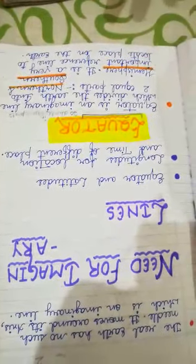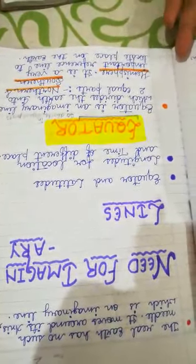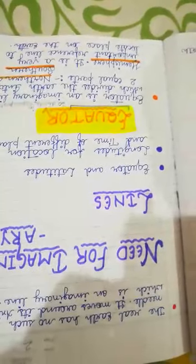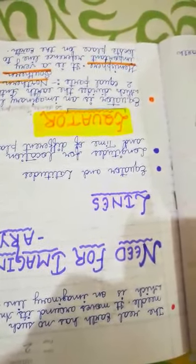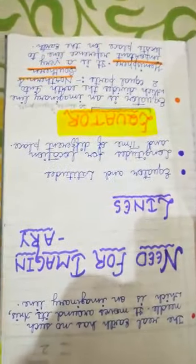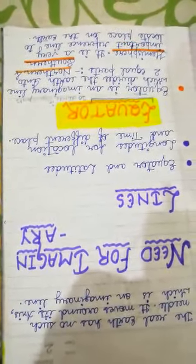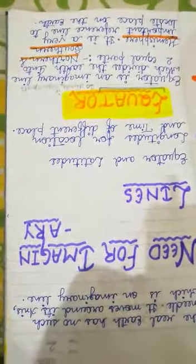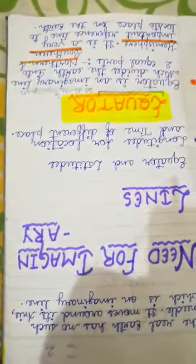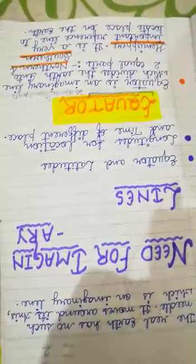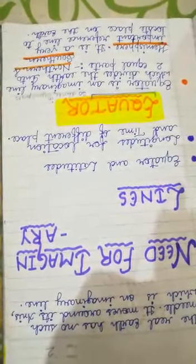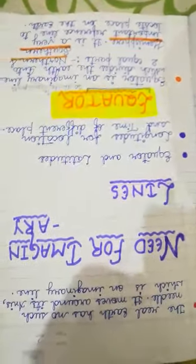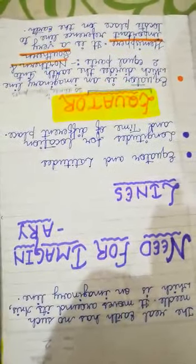Now with the help of an example I will make you understand. Suppose your friend wants to visit you — how will he or she come? First you have to give your address: your house number, then your colony name, then your city name. If any parameter is missing, he or she will not be able to come. In the same way, to search for places on the earth, these imaginary lines are formed.